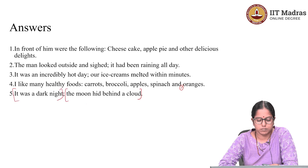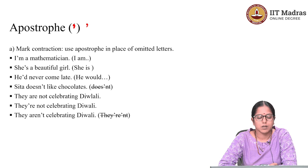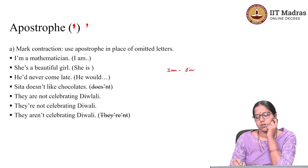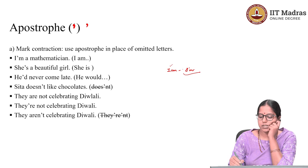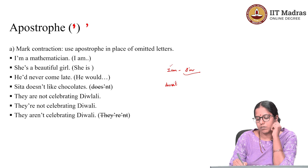Let us get to the final marker: apostrophe. Where do we use apostrophe? One use is to mark contractions. What are contractions? When we omit letters, it is called a contraction. For example, you must have seen people writing 'I'm' instead of 'I am' — 'I'm' is a contraction of 'I am.' Similarly, 'doesn't' is a contraction of 'does not.'